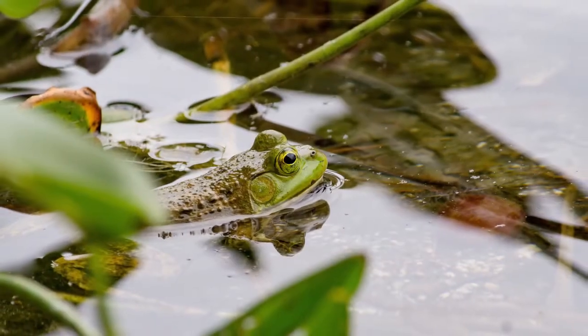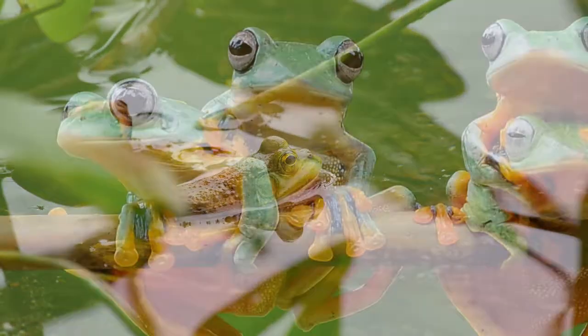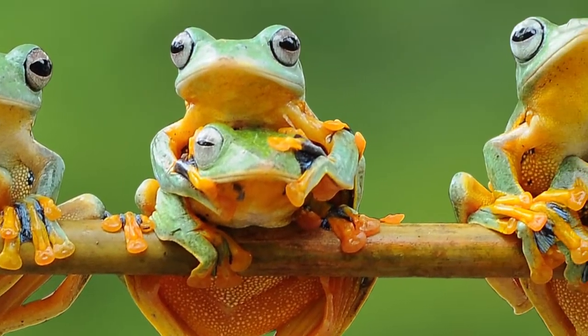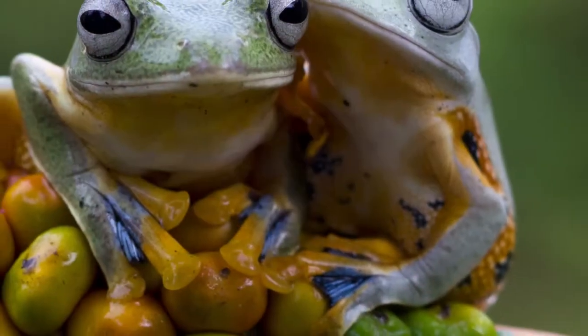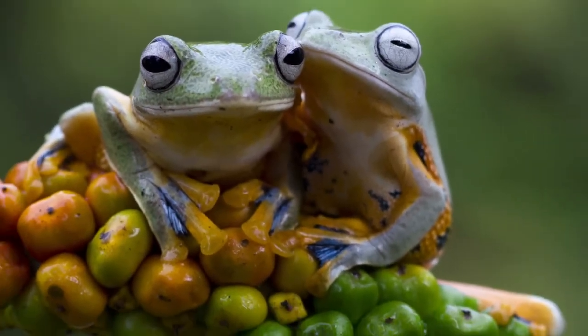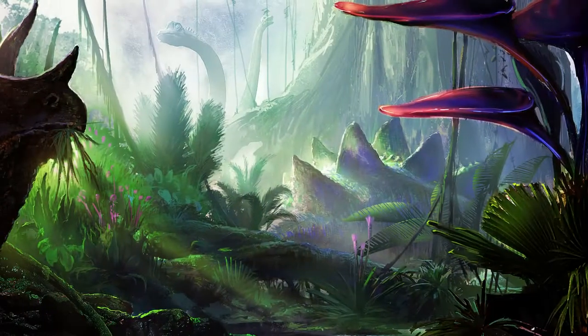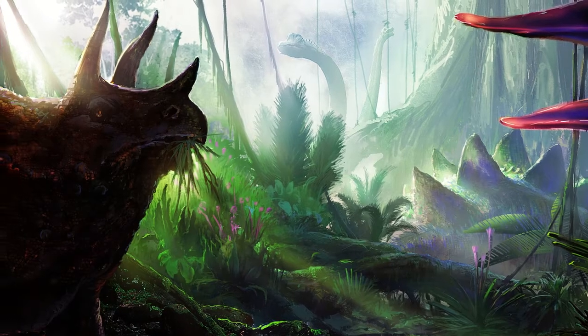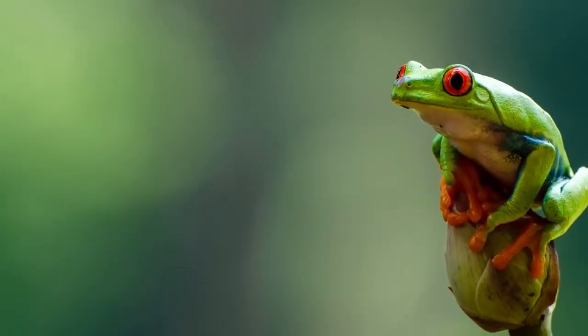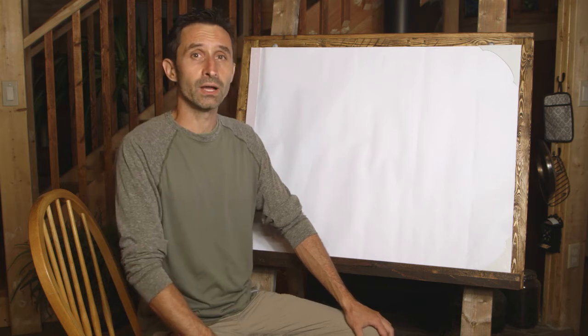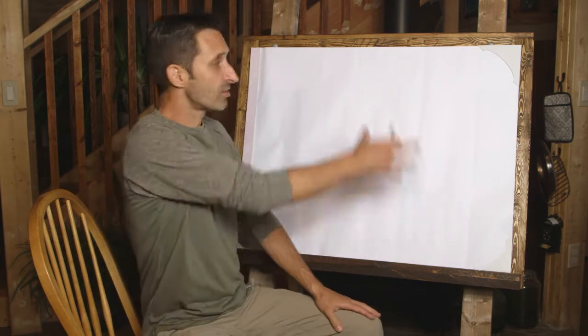Frogs come from a group of animals known as amphibians. To be an amphibian means you live part of your life in the water and part on land, and most frogs do just that. Frogs live on every continent with the exception of Antarctica, and they've been around for over 180 million years, which makes them older than the dinosaurs. There are almost 3,000 different species of frog, and the specific species we're drawing today is the green tree frog of North America.